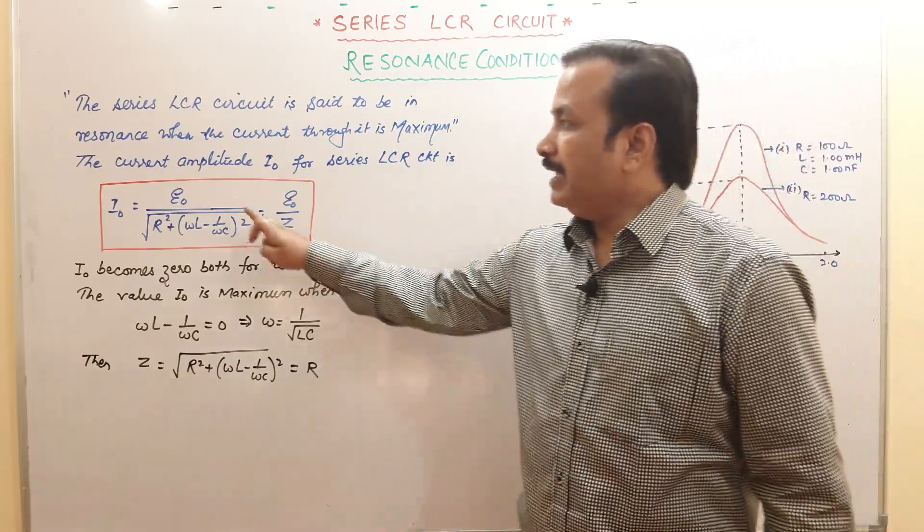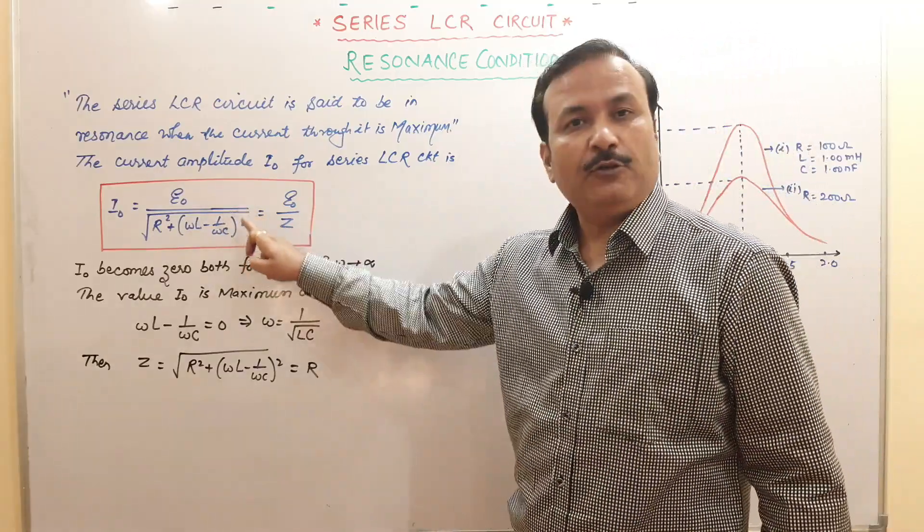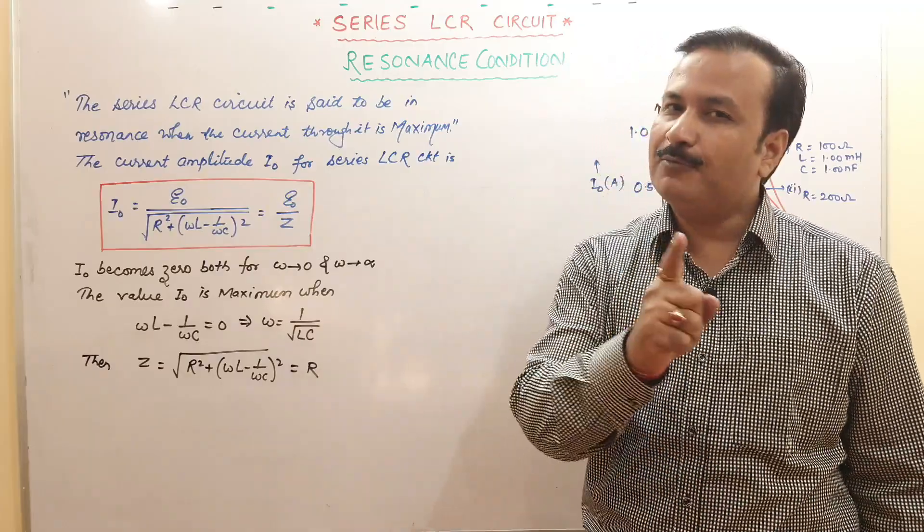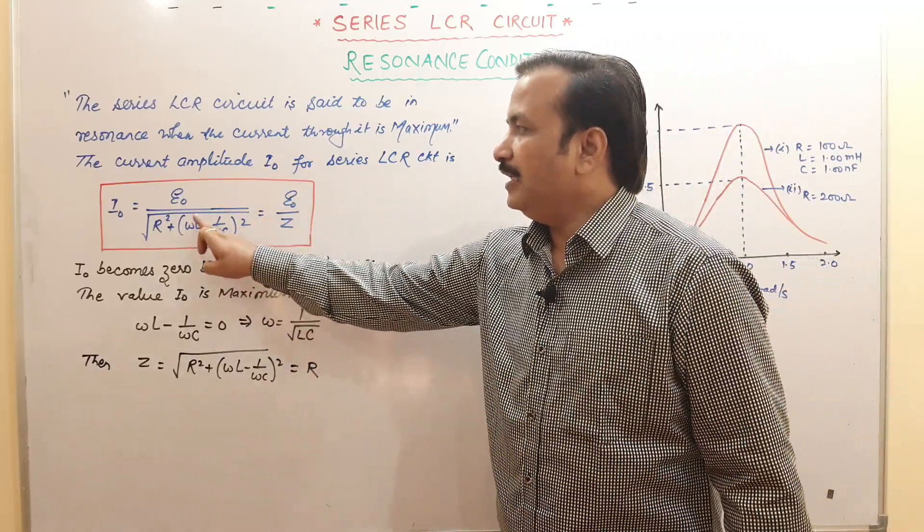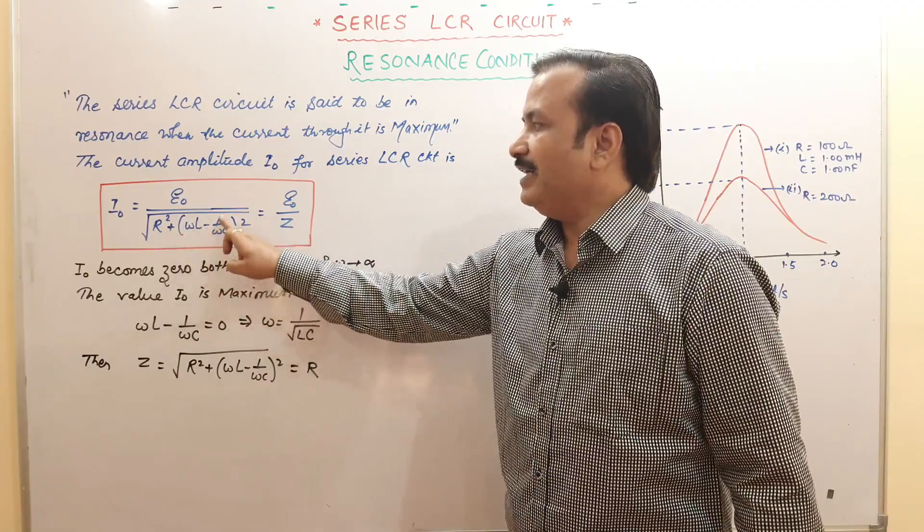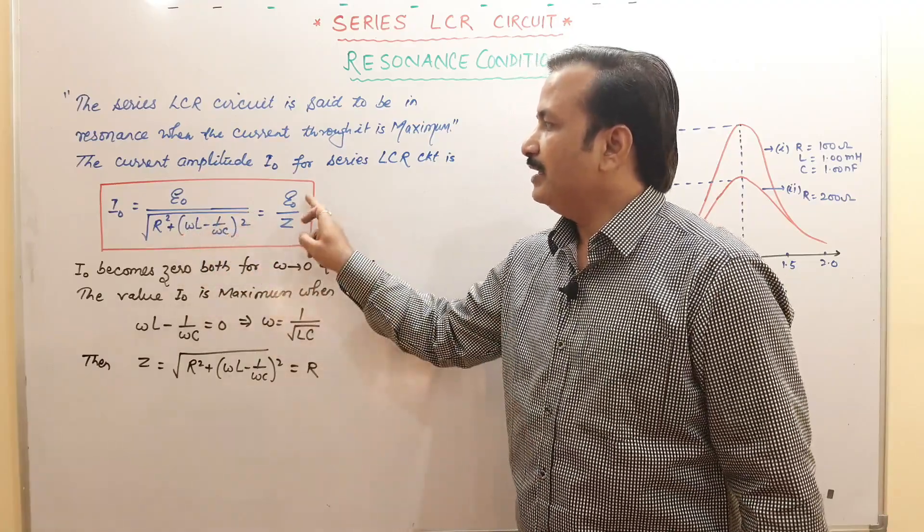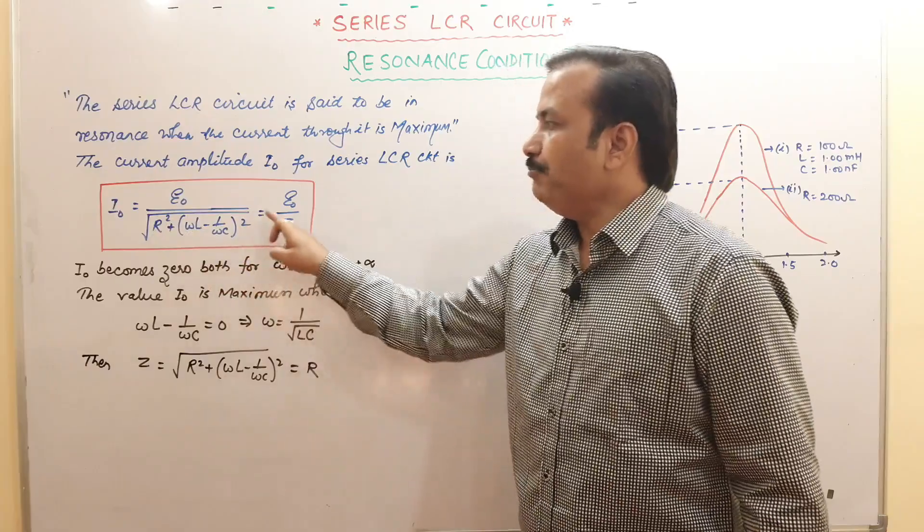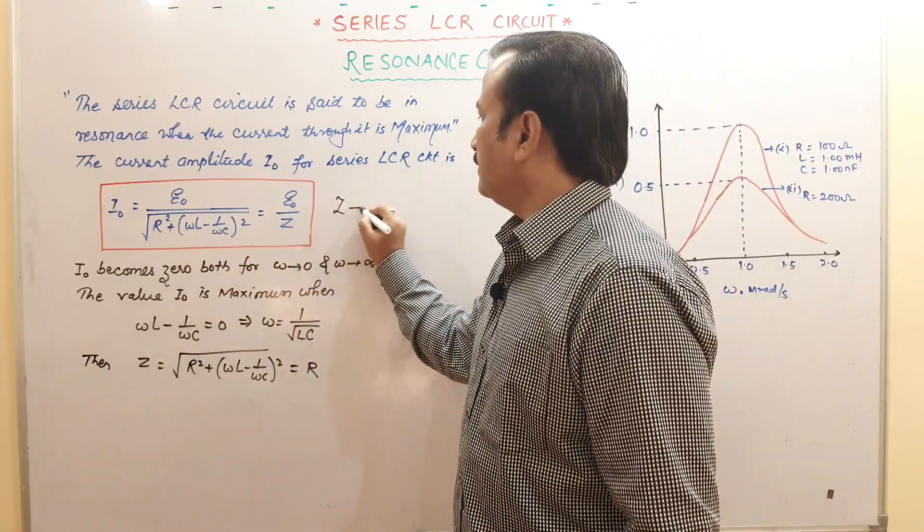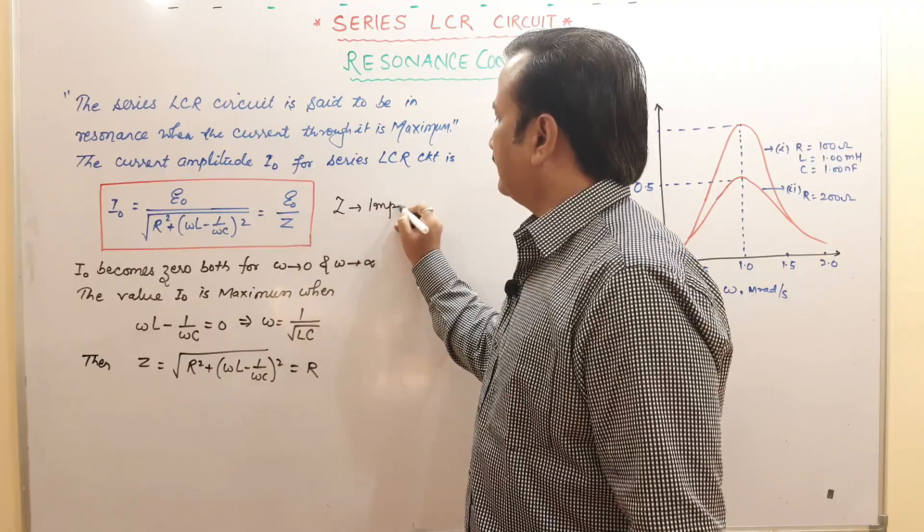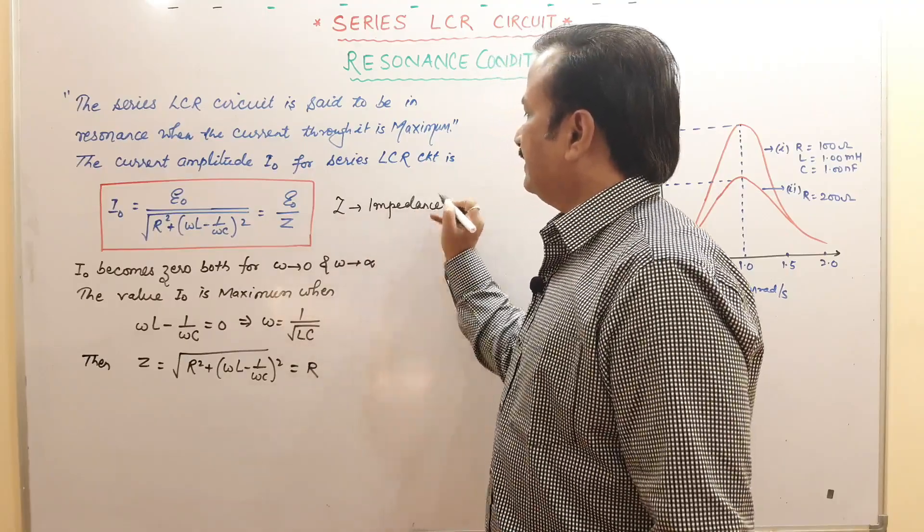When will current be maximum? The current amplitude value we calculated in the previous video. For that you have to watch the previous video. E naught upon under root r square plus omega l minus 1 upon omega c whole square. E naught upon this we say impedance z. This z is called impedance of the LCR circuit.